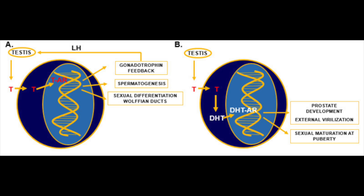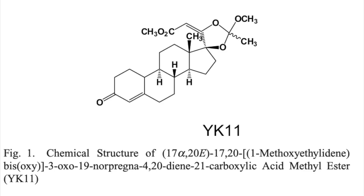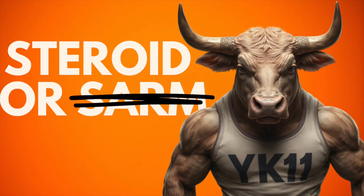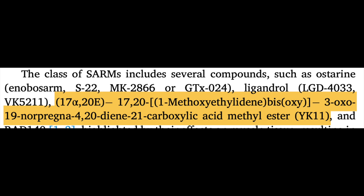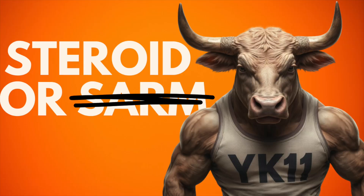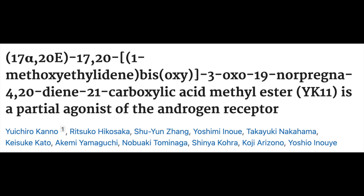For instance, targeting the androgen receptors in muscle and bone would in theory have quite different effects than binding the androgen receptors of the prostate. Mechanistically speaking, YK11 is a bit different than your typical SARM, and I would argue it's less SARM-ish than the others. There's not much research on this one, especially since Ostarine is the most researched SARM and certainly has its limitations. YK11 isn't really a SARM — instead it's more of a steroid, given its structure and broader androgenic activity, as the research comparing it to DHT suggests.